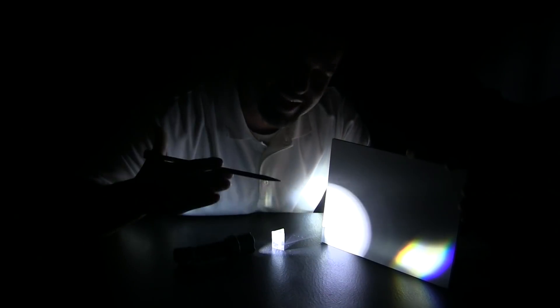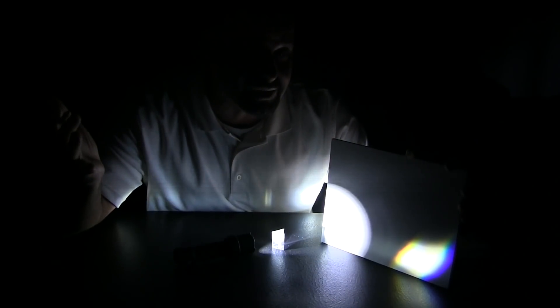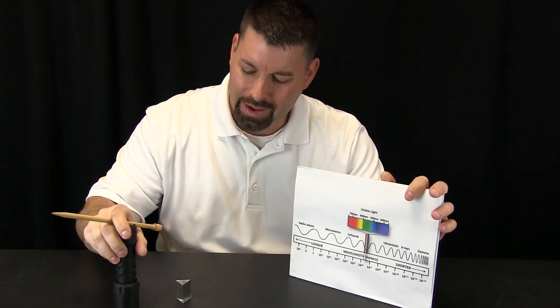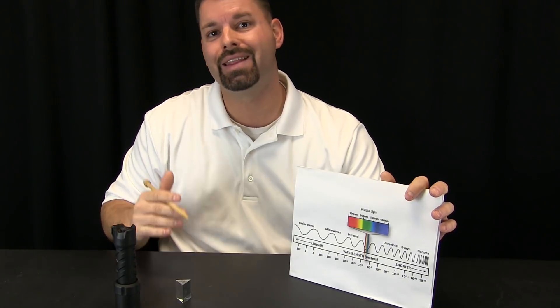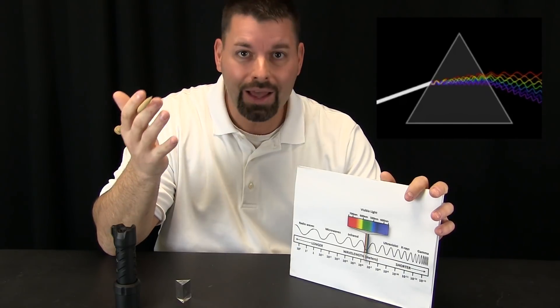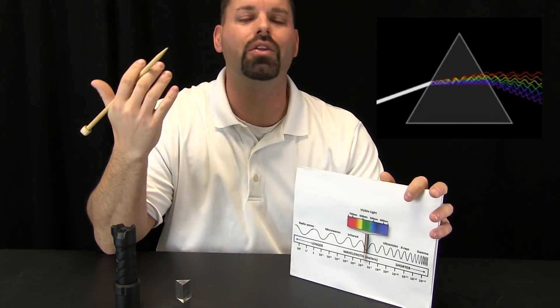Light goes through something that slows it down and bends it. What is that something in the sky? Well, it is raindrops. So all we did there is pass light through a piece of glass and that slowed it down and bent it. It is pretty neat to think that light is actually made up of all these different colors.